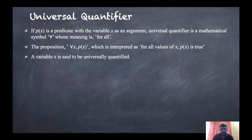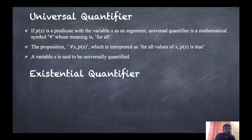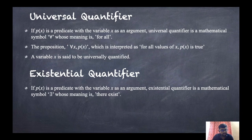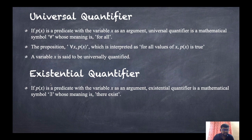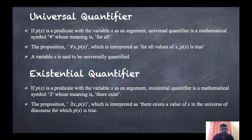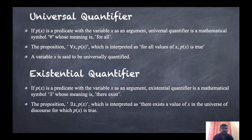The variable is called universally quantified if this holds true. The second type is the existential quantifier. If P(x) is a predicate with variable x as an argument, the existential quantifier symbol is like a rotated E (∃), whose meaning is 'there exists.' The proposition ∃x, P(x) or ∃x [P(x)] is interpreted as: there exists x such that P(x) is true — or, there exists a value of x in the universe of discourse for which P(x) is true.